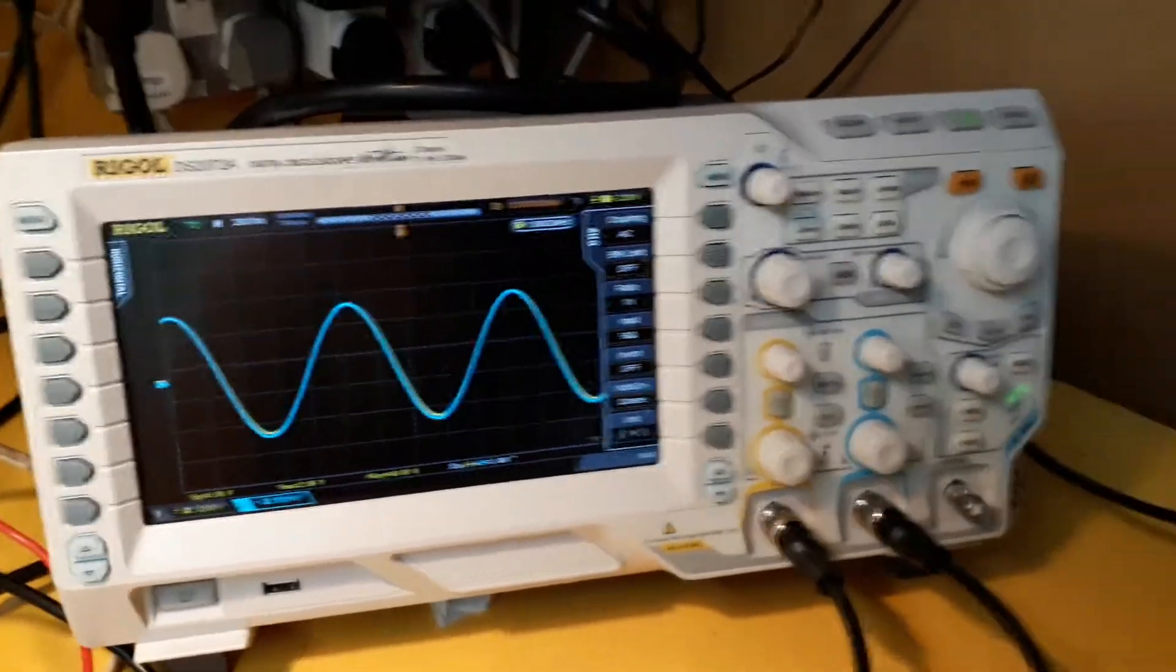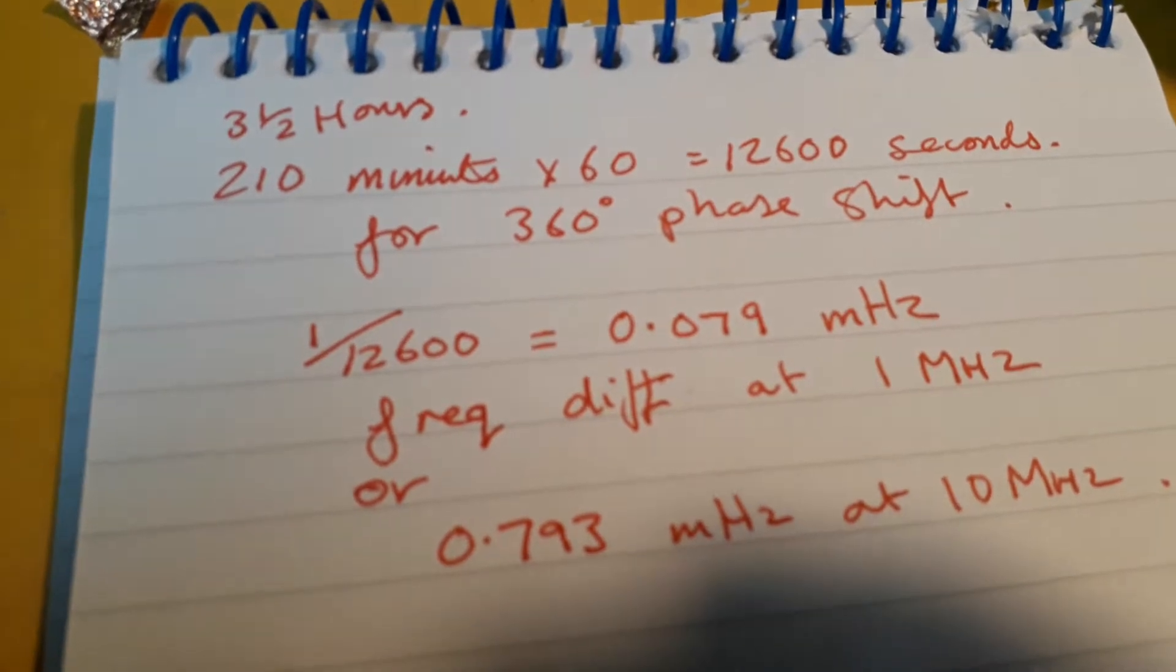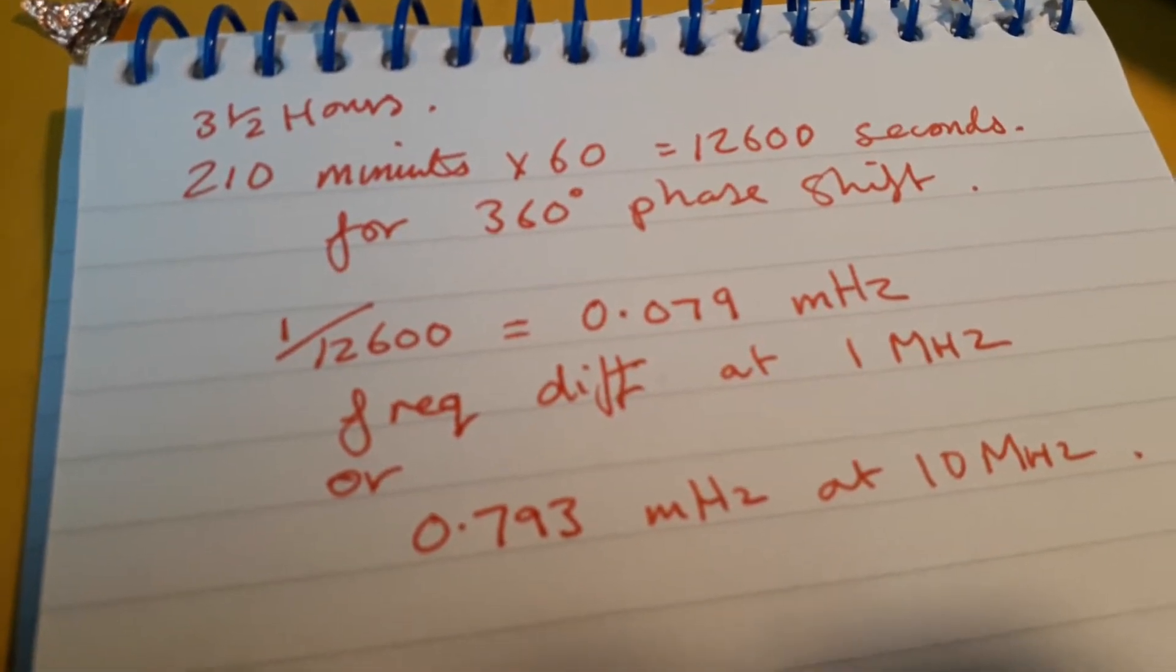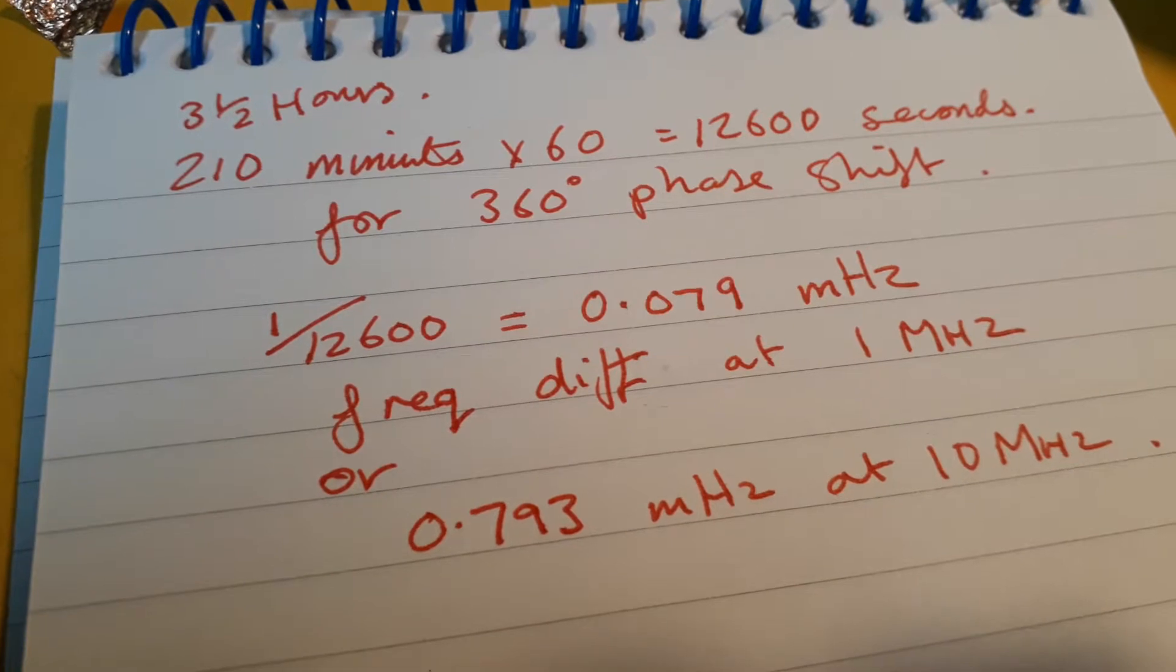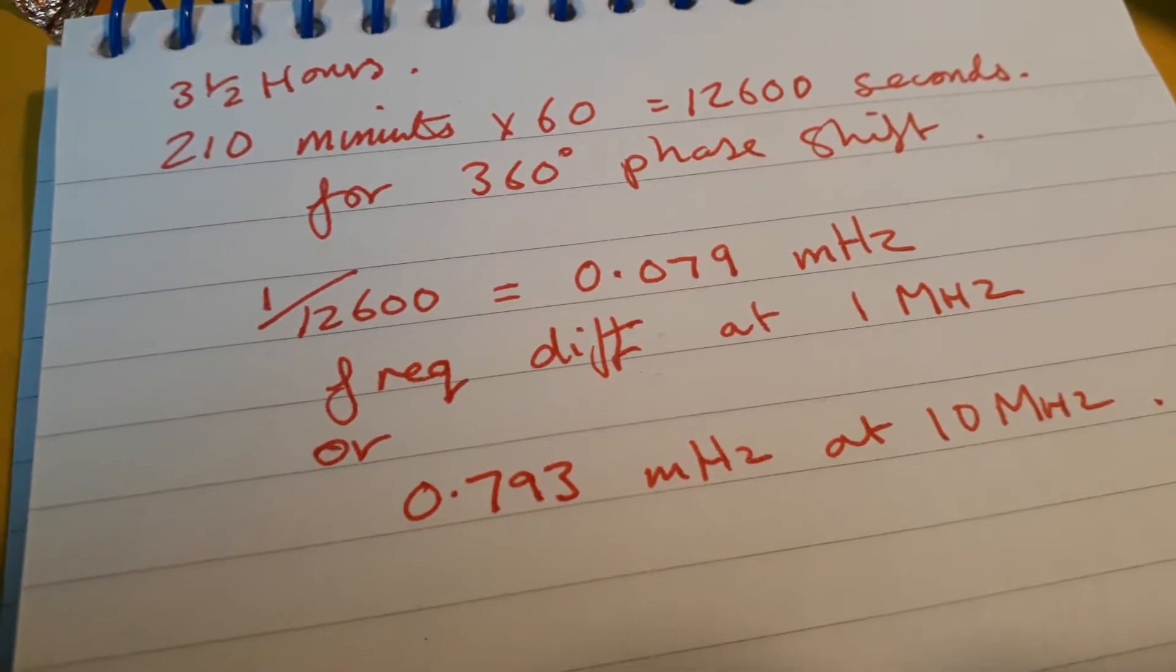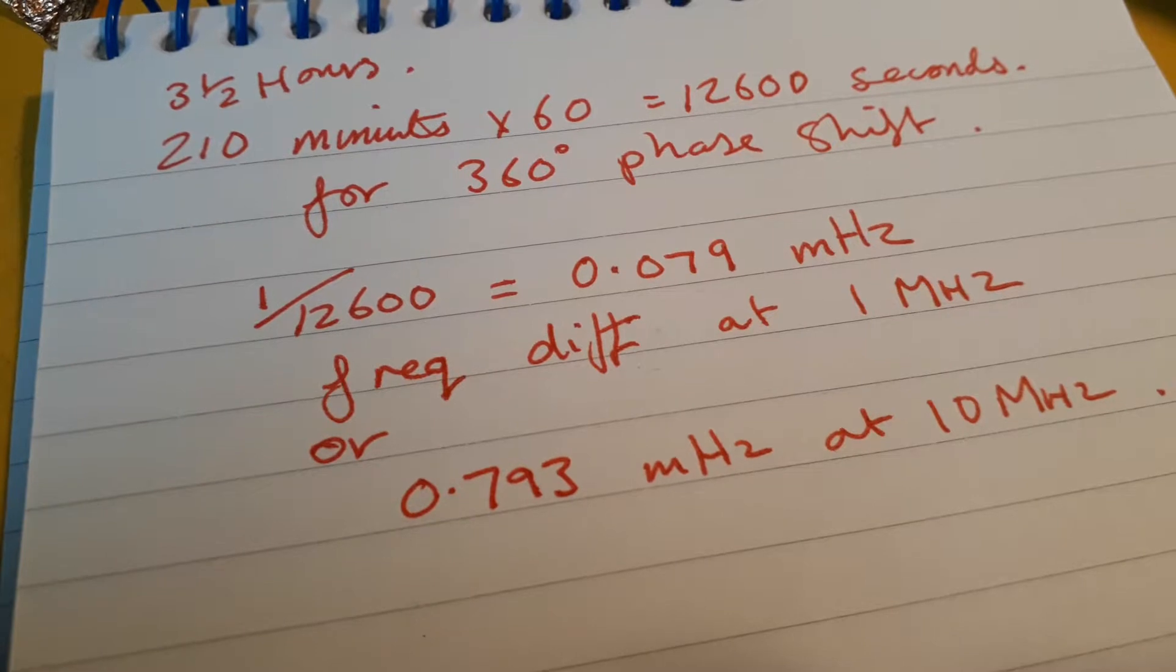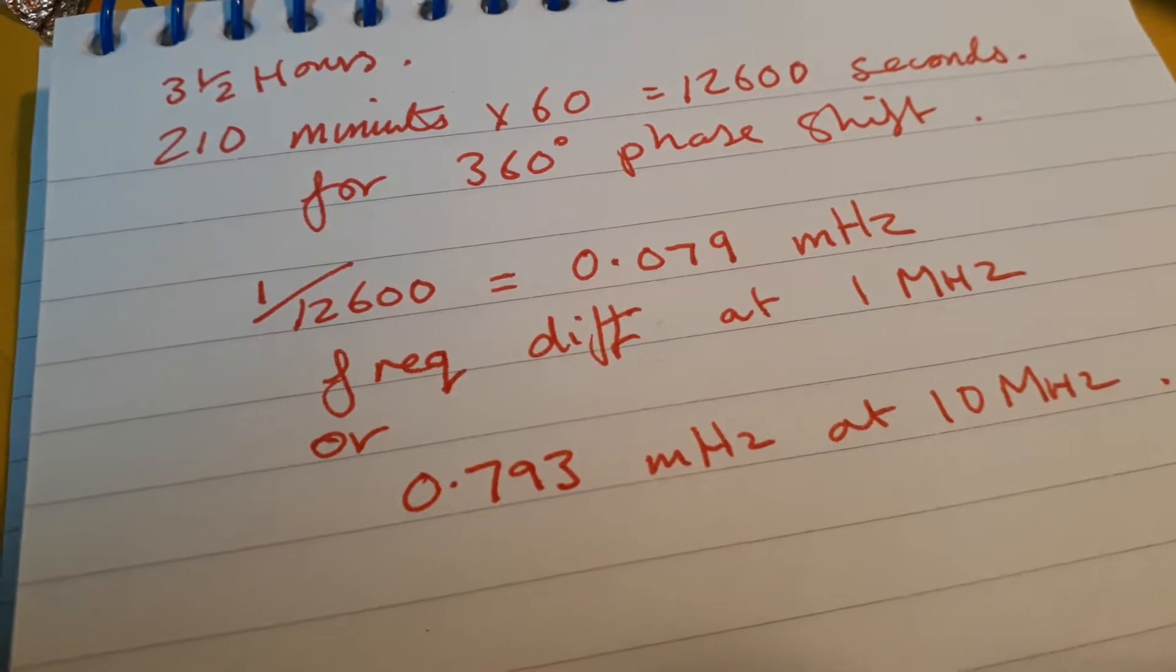So I've done some calculations over here, and as you can see, it's taken three and a half hours to do 360 degrees of phase shift. That's 210 minutes, which times 60 is 12,600 seconds for 360 degrees of phase shift. And if you take the inverse of phase shift, that equals 0.079 millihertz difference between the GPSDO and the off-air frequency standard, which is not much. It's a pretty small number, but there still is a difference.